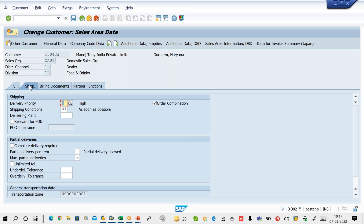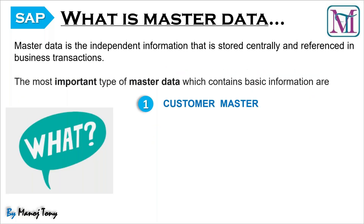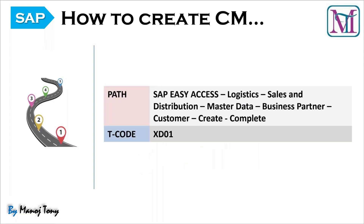If delivery exists, then billing will be created. That is the reason we have to know customer master creation, material master creation, stock posting, and the order creation, delivery, and billing process. For SD consultants, the master data we have are: customer master, material master, condition master (also called pricing master), and customer material info record (CMIR).